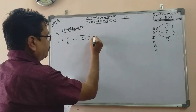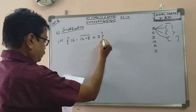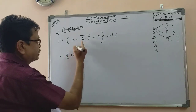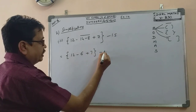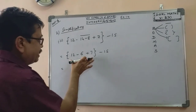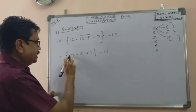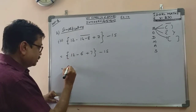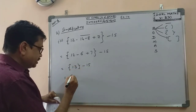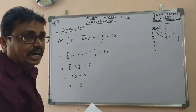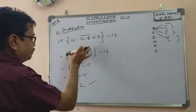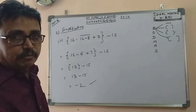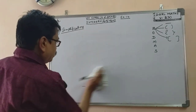Next example with brackets: minus 14 minus 8 plus 7 minus 15. Opening the brackets: 12 plus 7 is 19, then 19 minus 6 is 13. Then 13 minus 15 equals minus 2. The answer is minus 2.